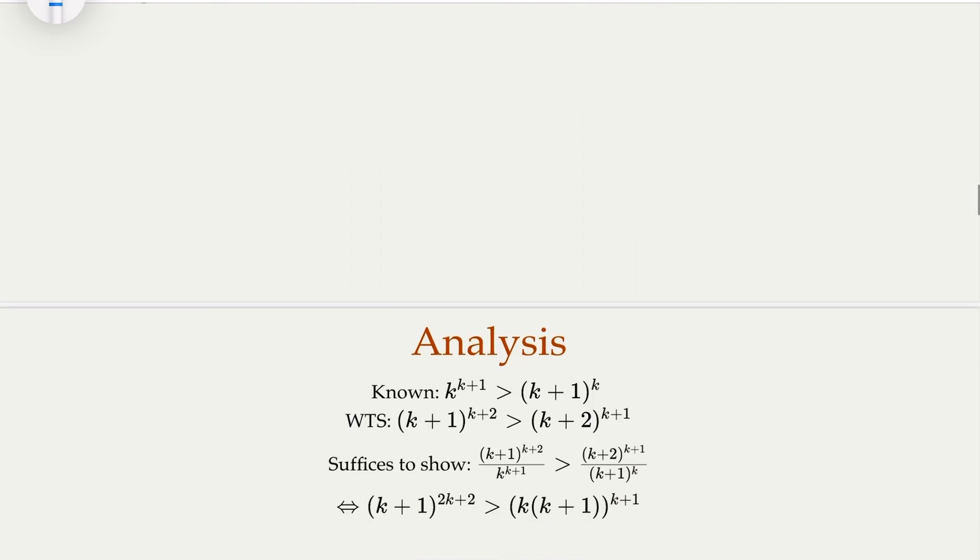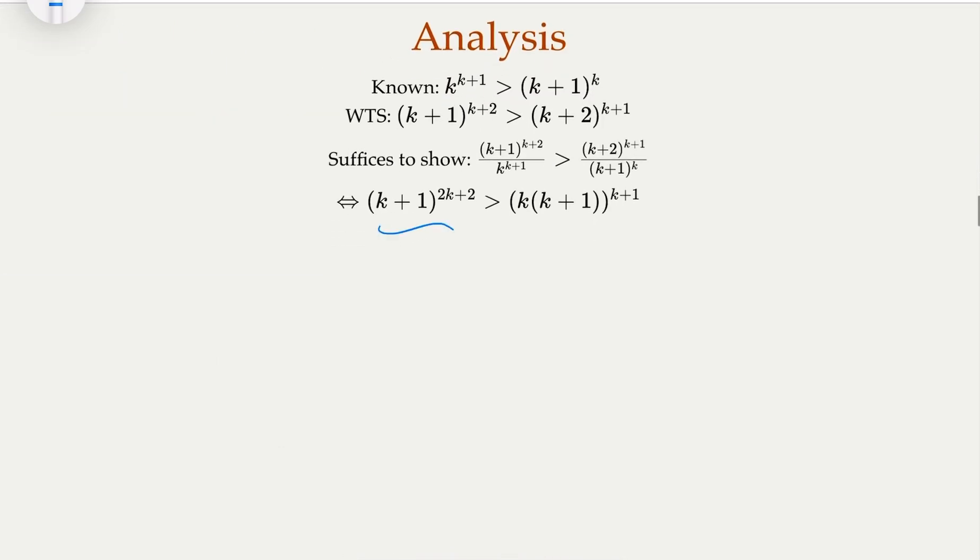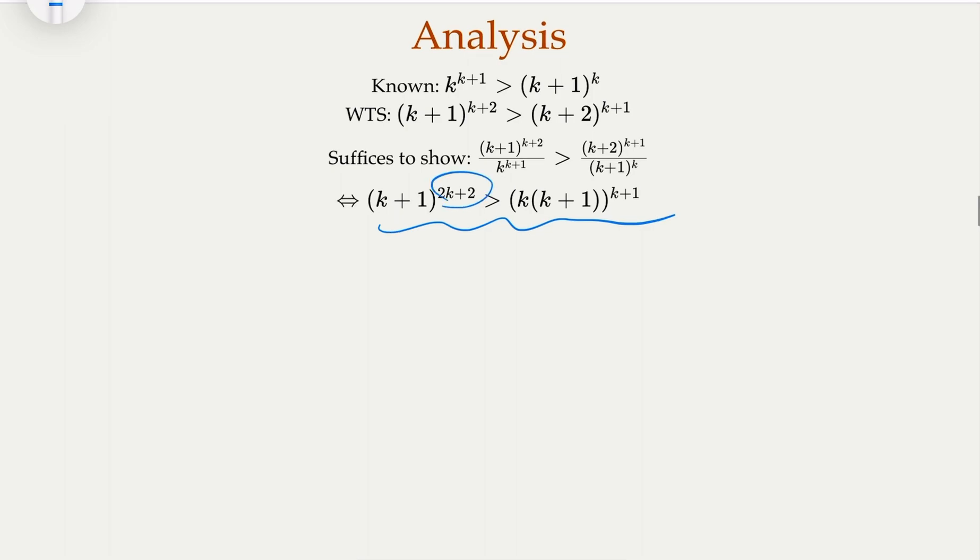When you do the cross product, what do we have here? We need to prove this one, which is the cross product. Of course, when you look at this, this is like a power. This is k plus 1 squared, and then k plus 1's power, greater than here is going to be k squared plus k raised to k plus 1's power. This is what we need to do.